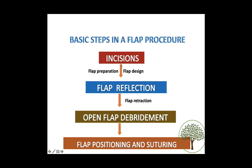Basic steps in a flap procedure: give your incisions using the different blades — not all incisions are necessary in every flap surgery. Once you have given the required incisions, reflect the flap. With the flap open, perform debridement — remove soft tissue, granulation tissue, infected tissue, and calculus. Then reposition the flap and suture. That's it.